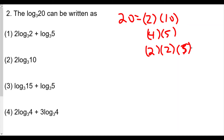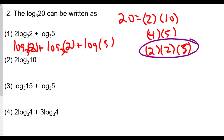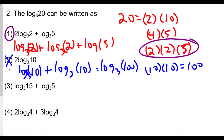For choice one, 2 log base 3 of 2 plus log base 3 of 5 means two copies of log base 3 of 2 plus log base 3 of 5. That gives us log base 3 of (2 times 2 times 5) = log base 3 of 20 — this works! For choice two, 2 log base 3 of 10 means log base 3 of (10 times 10) = log base 3 of 100, so that's not 20.